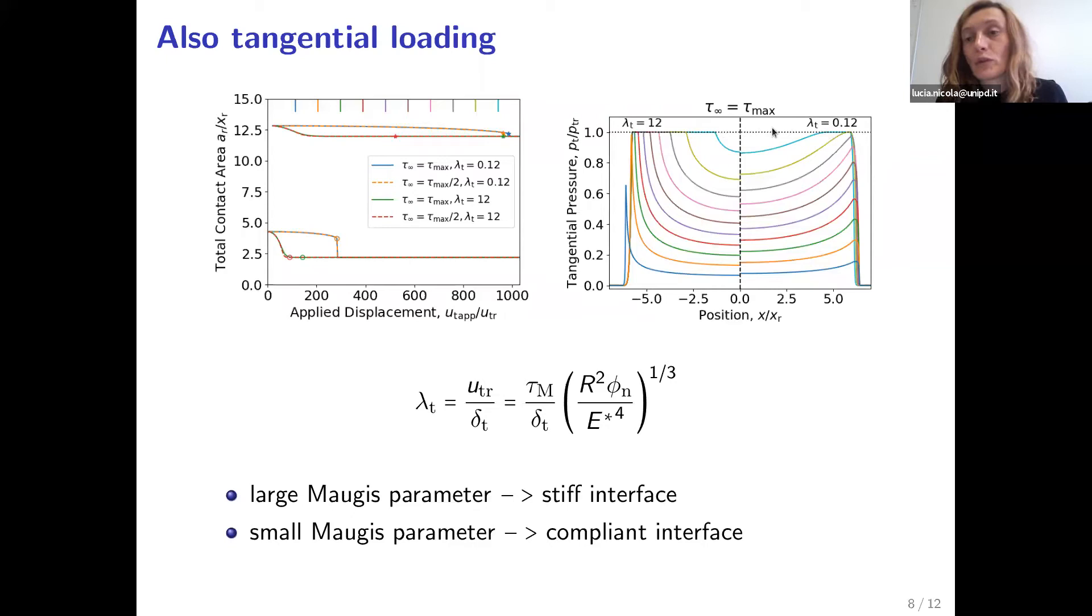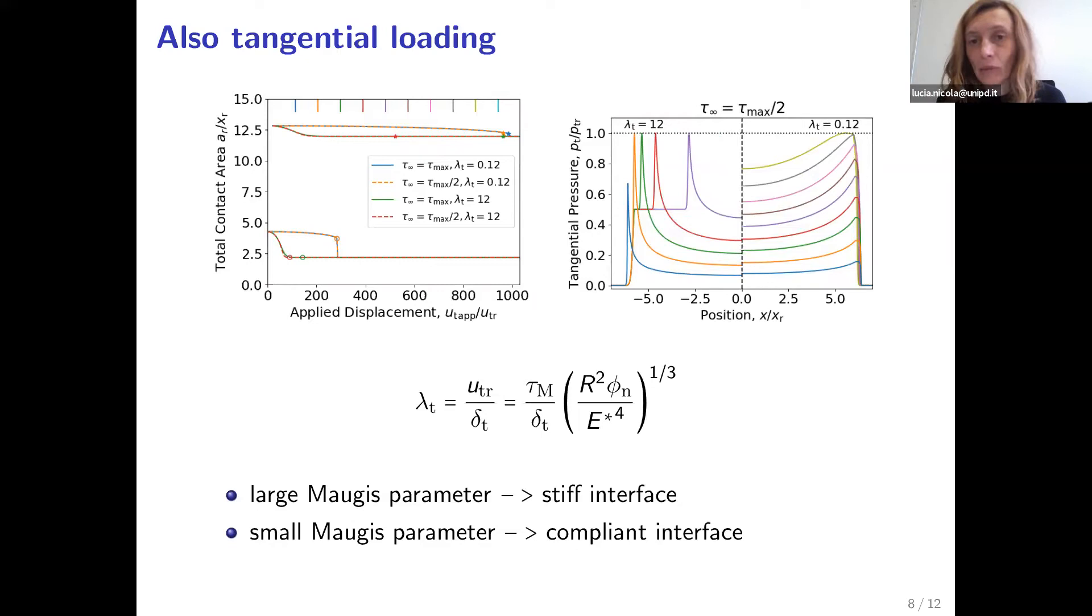Now, if we want to see what happens with the other traction separation law, which is the one for which we allow some decay of the traction before it levels off at tau max divided by 2, we now compare this figure with the figure with the tractions at infinity being tau max divided by 2. And the first thing to notice is that for the interface which is more compliant, the difference is practically negligible. While for the interface that is stiffer, there is a significant difference. And the difference is mostly at the edges of the contact. So when the contact has been sliding, then the tractions are limited by tau max divided by 2. And at the edge of the contact, there still is a spike that is as high as tau max, and that decreases when we go to the center of the contact.